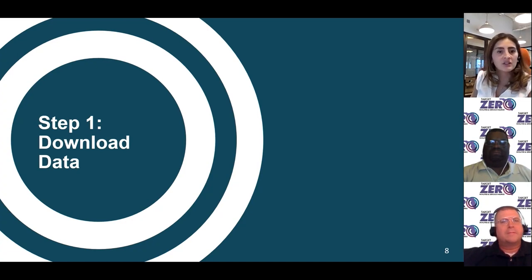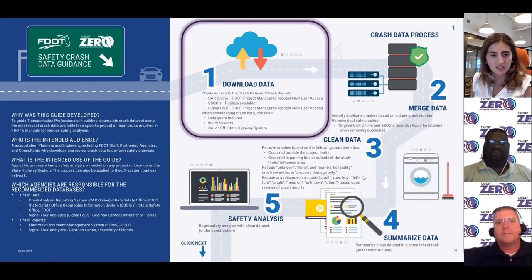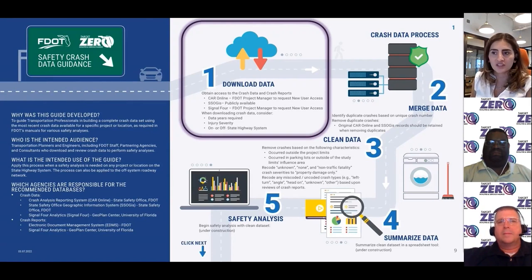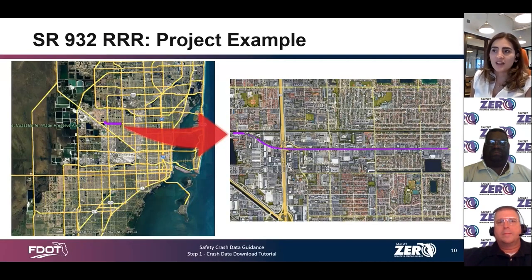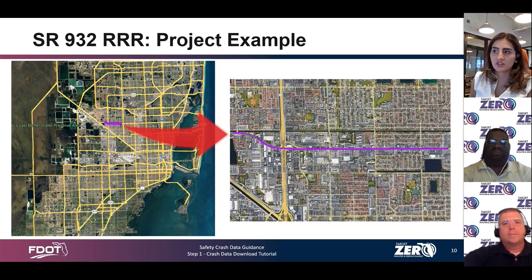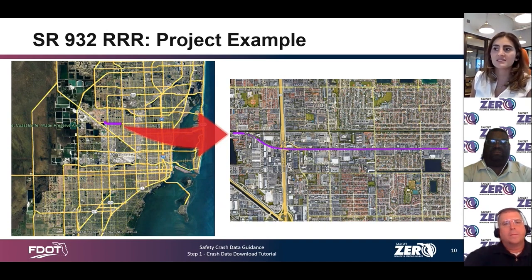For this first module, we're covering Step 1 of the guide, which is data download. This is a high-level snapshot of the first page of the guide, labeled Step 1. Through the guide, you'll notice several questions answered in the corresponding order for the five steps. Now that we've covered the essential background, we'll dive into Step 1. The project example is a Resurfacing, Restoration, and Rehabilitation project — RRR — along State Road 932 within District 6, from west of Northwest 82nd Avenue to east of West 6th Avenue in Miami-Dade County.